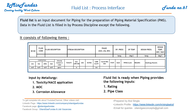In this fluid list, a few inputs are given by the metallurgy team: toxicity, NACE application, material of construction, and frozen allowance. These three inputs from metallurgy become part of the fluid list. Once piping adds its inputs, the fluid list becomes complete and is used for design activities.